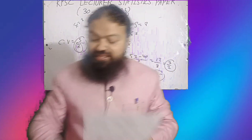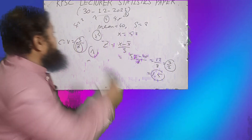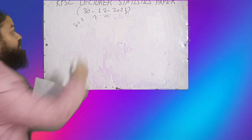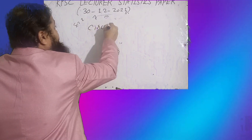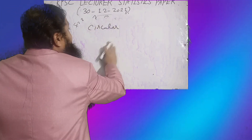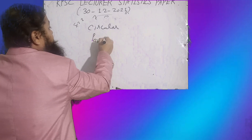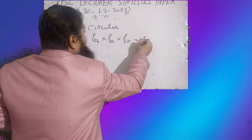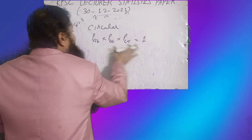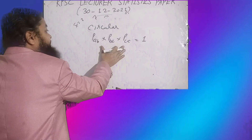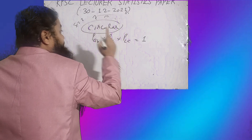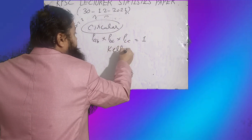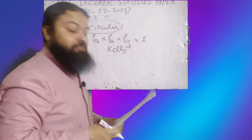Fisher's index number does not satisfy the circular test. The circular test is an extension of the time reversal test: P_{ab} × P_{bc} × P_{ca} = 1. It is not satisfied by Fisher's ideal index number but is satisfied by Kelly's index number — a very important point.